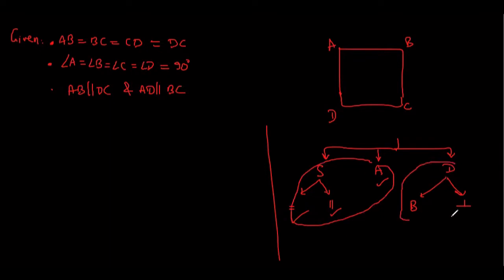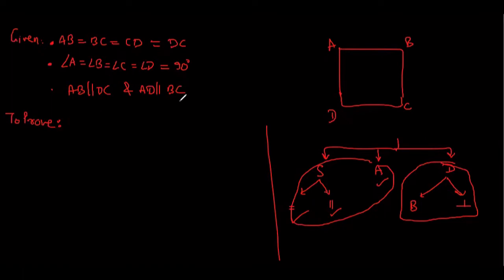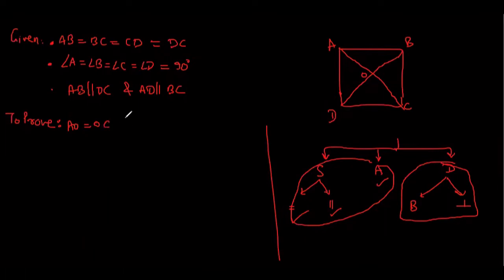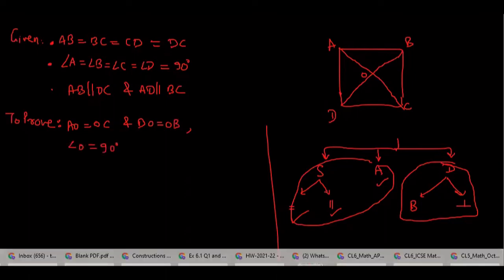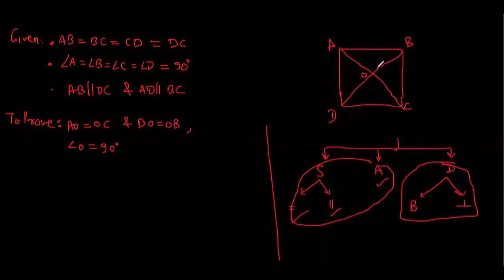What about these two things? In the question, they are asking you to prove them. We have to prove AO equals OC, BO equals OD, and angle O equals 90 degrees, because the question says the diagonals bisect each other at right angle — that means the angle where they meet is 90 degrees. Do you understand now what the question is asking?